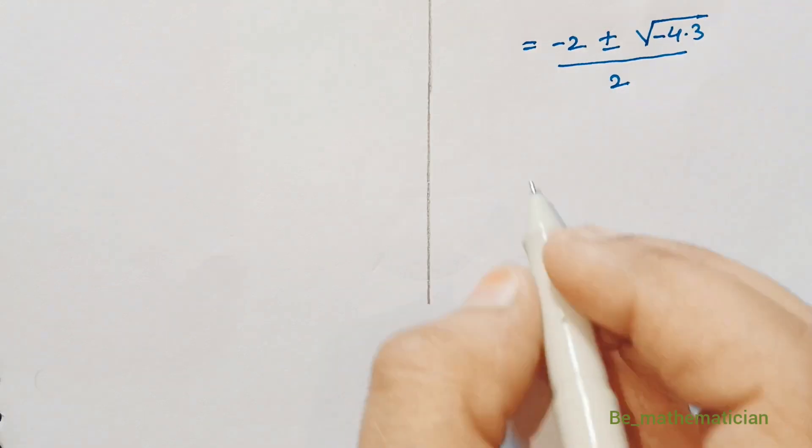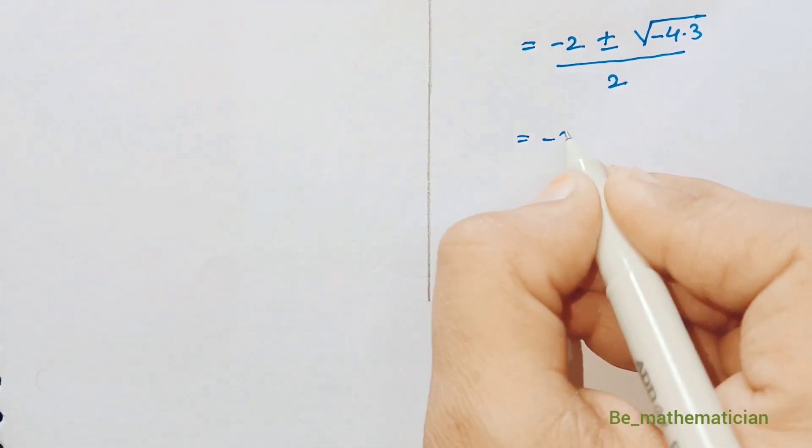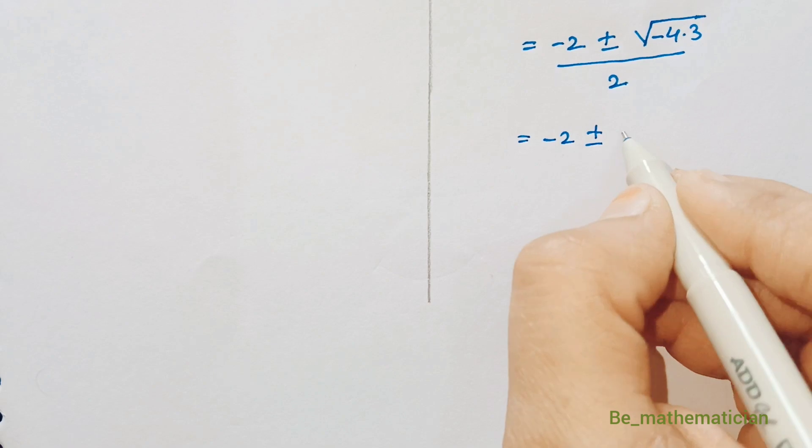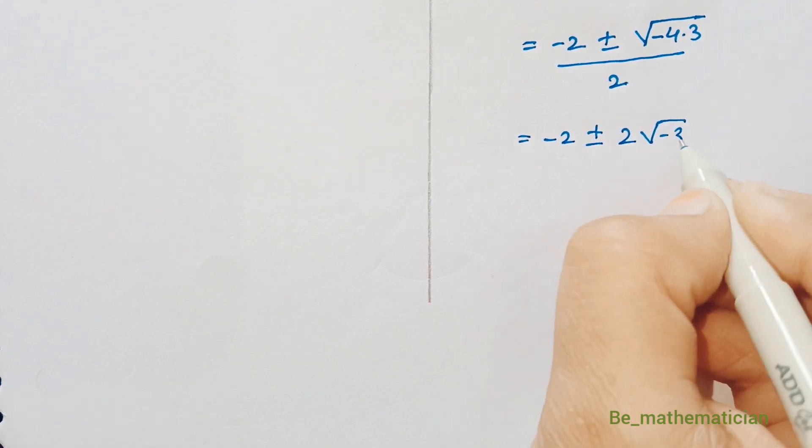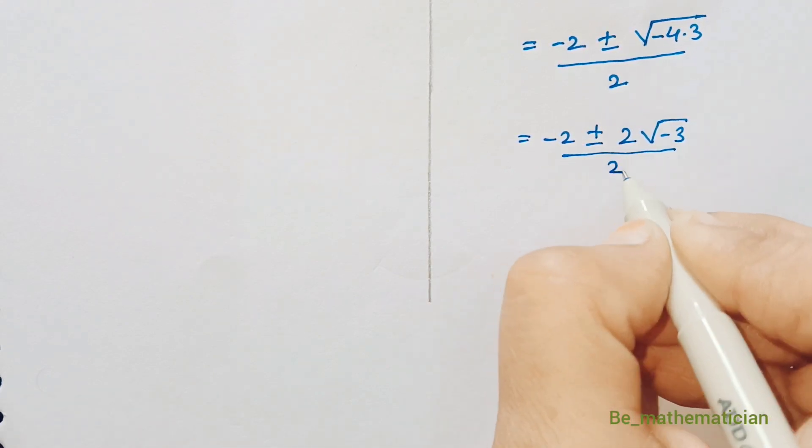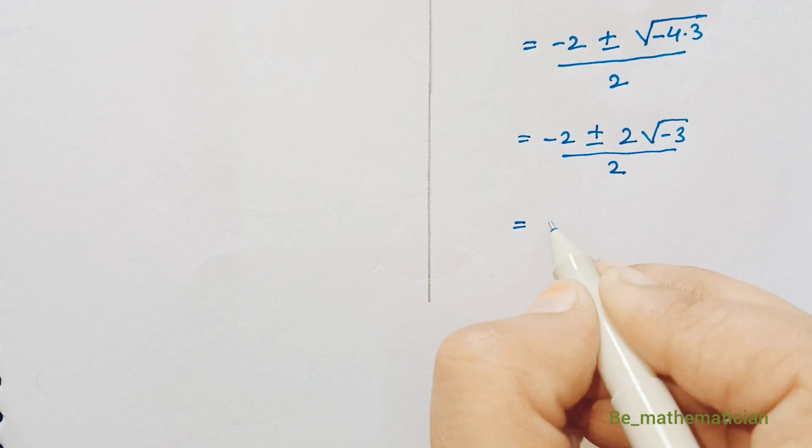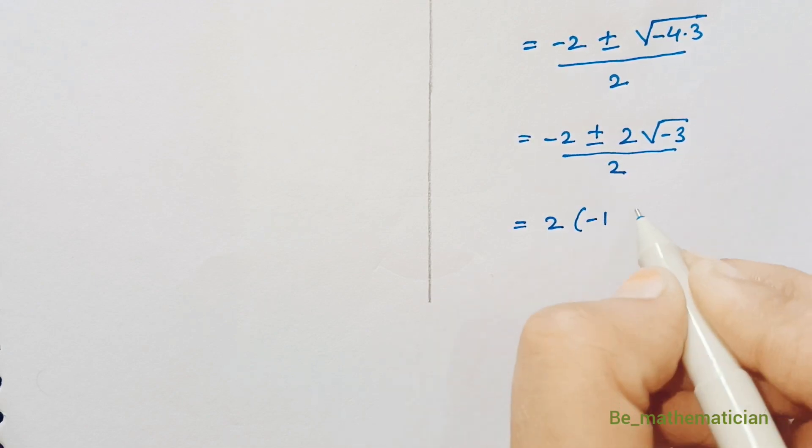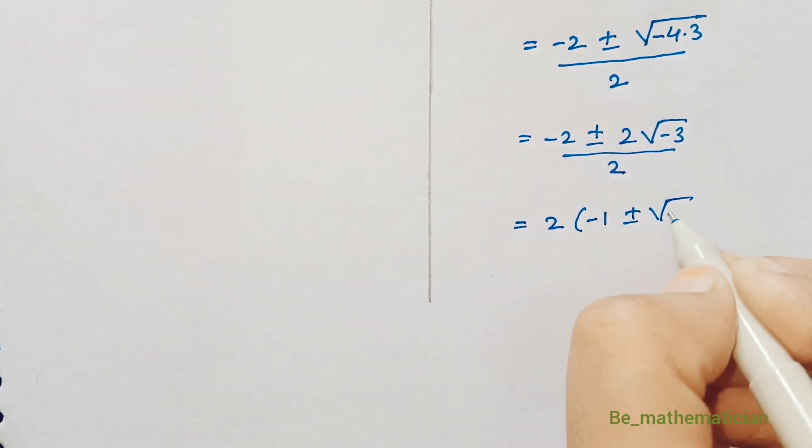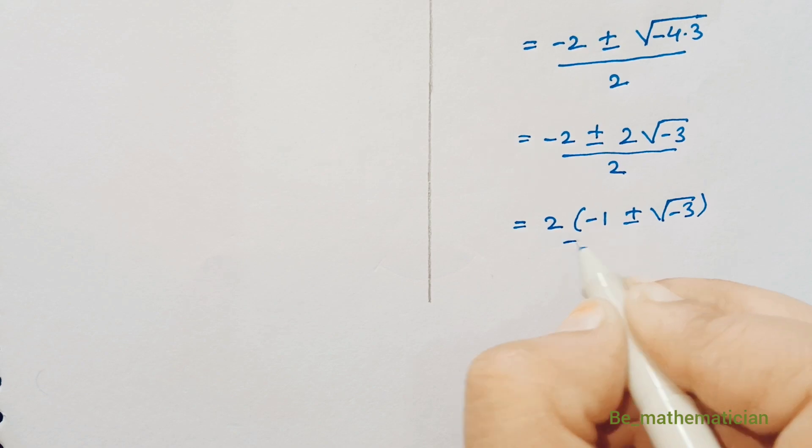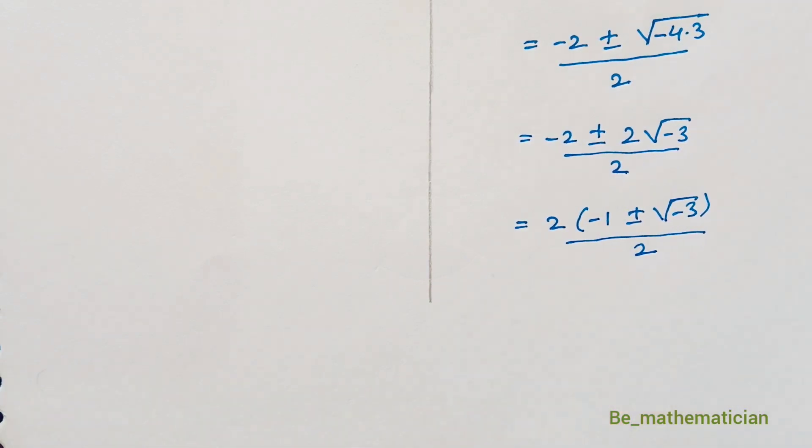That equals minus 2. And we know square root of 4 is 2. So it becomes 2 into root of minus 3 divided by 2. Now take 2 common. So we get 2 into minus 1 plus or minus under root of minus 3 whole divided by 2. 2 and 2 gets cancelled.